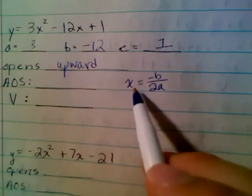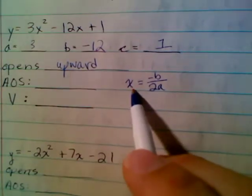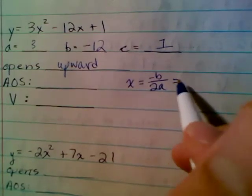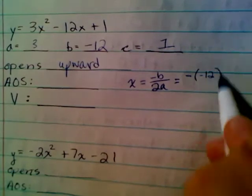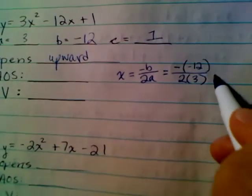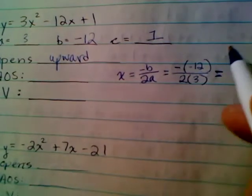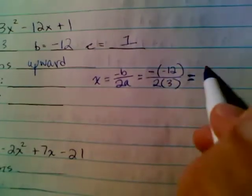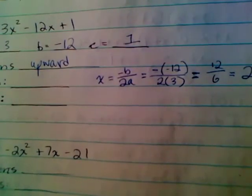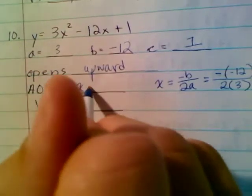A lot of people want to skip that. You have to write x equals, because the axis of symmetry is a vertical line, and x equals tells me that it's a vertical line. So anyway, we have x equals negative negative 12 over 2 times 3. If you're following PEMDAS correctly, this gives me positive 12 over 6. And 12 over 6 is 2. So my axis of symmetry is x equals 2.